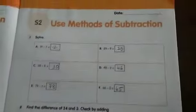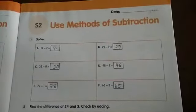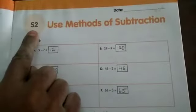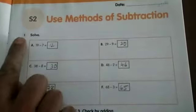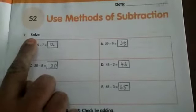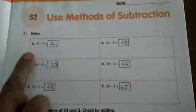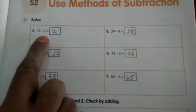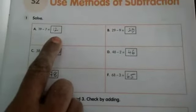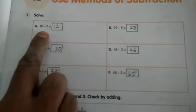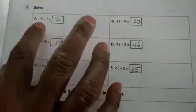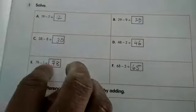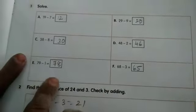Take out your workbook page number 11. Write today's date. Use methods of subtraction. Your first bit is solve. So what is given here? A1, 19 minus 7. We are subtracting children. Take the help of 100 chart and do.